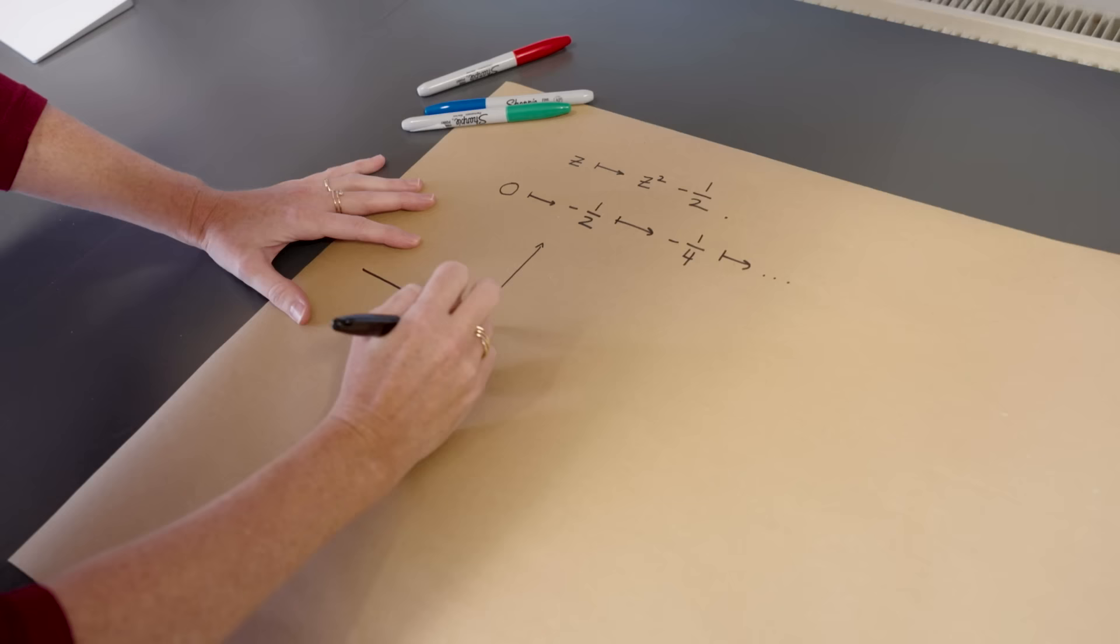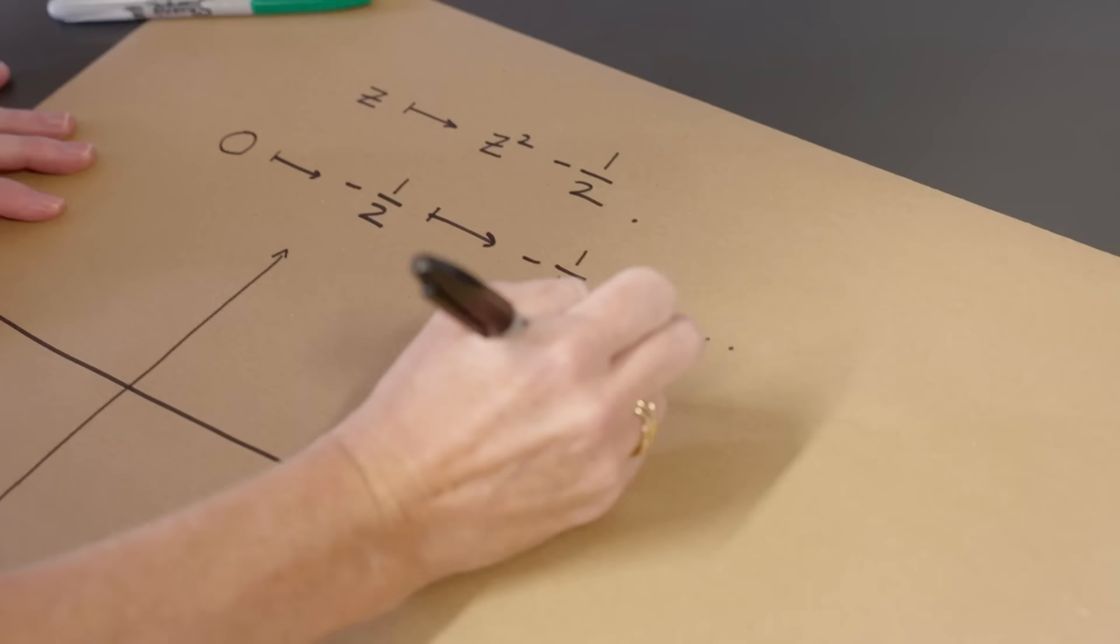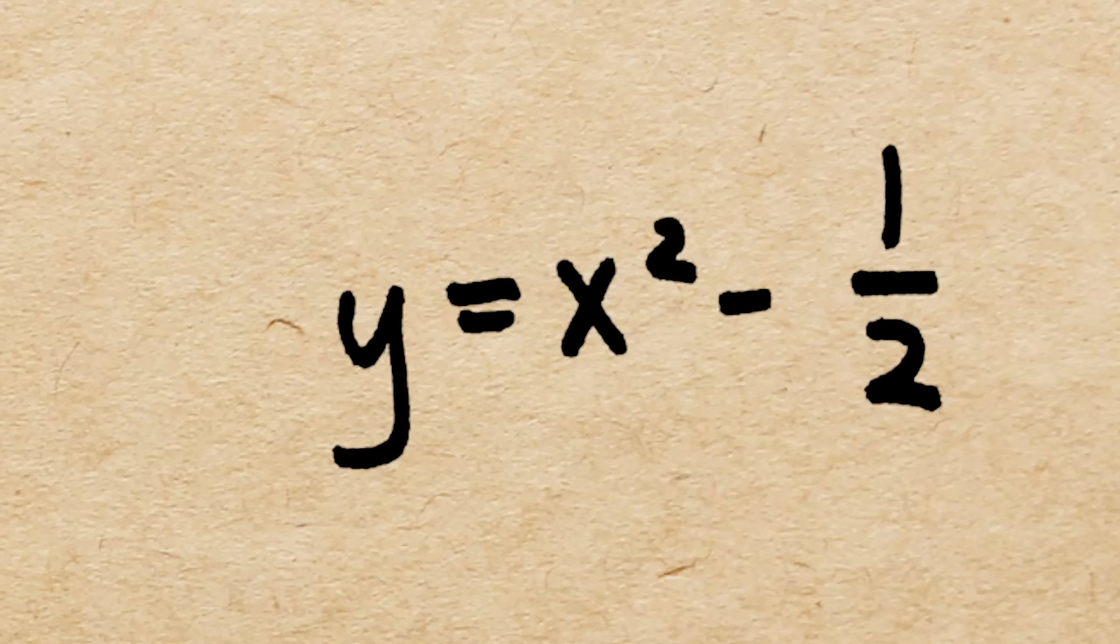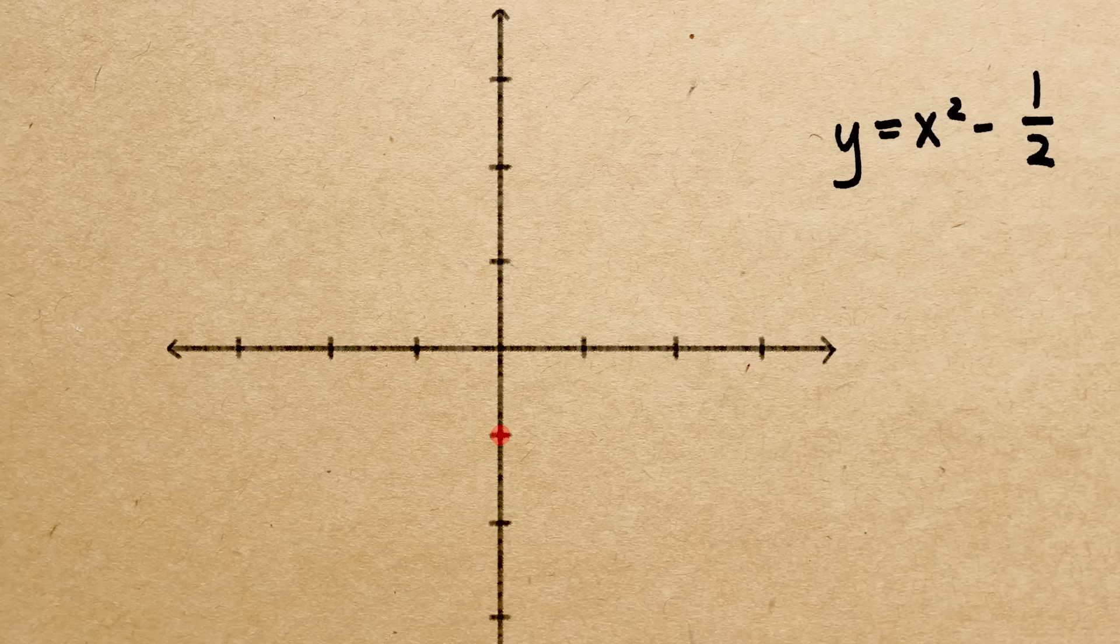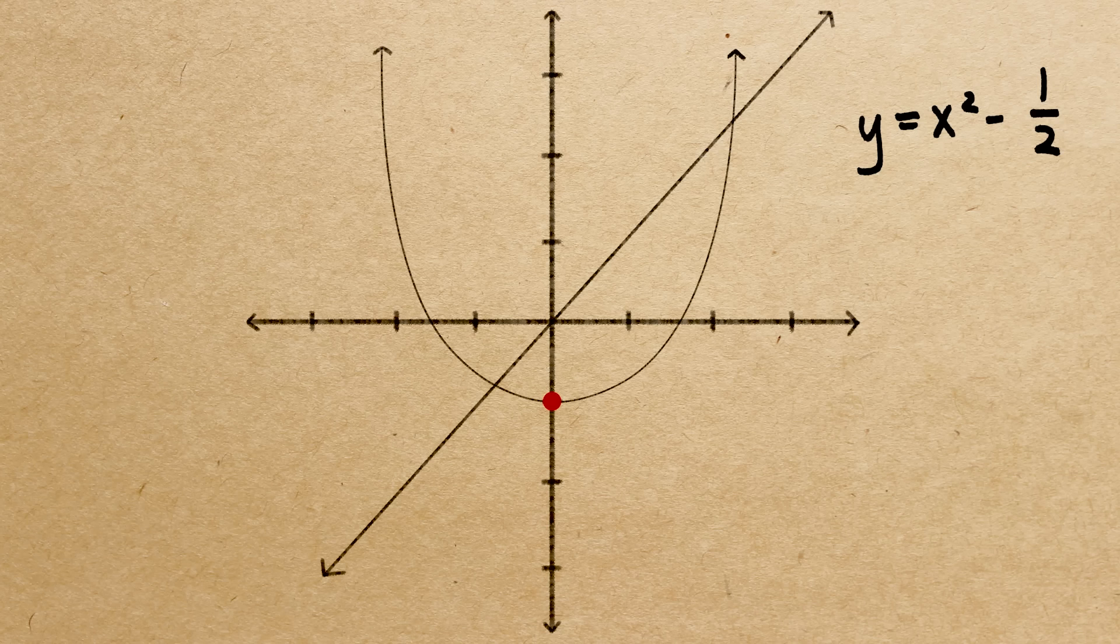So if I draw the graph of this function, sorry, this feels like you're taking an exam. If I draw the graph, say y equals x squared minus one half, so when x is zero, I'm here, and it's going to be shaped something like this. And then I'm going to draw the line. This line is the graph of the equation y equals x, a line that's at 45 degrees to the horizontal.